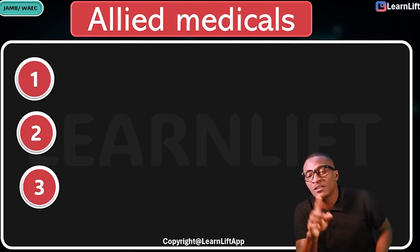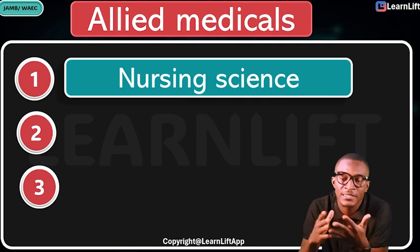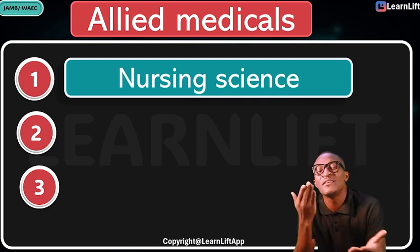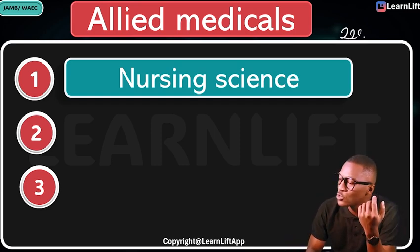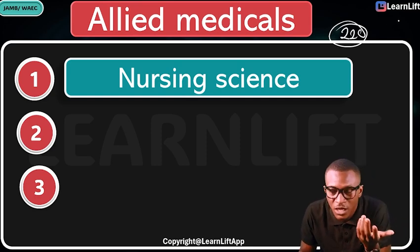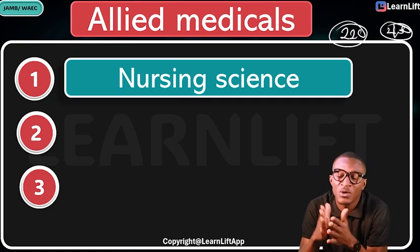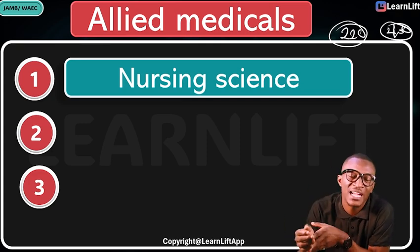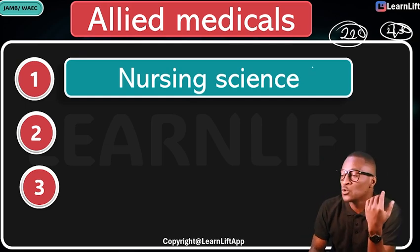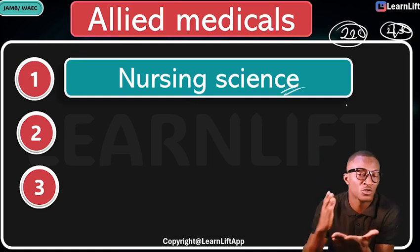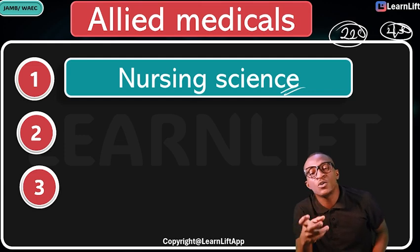Now let's talk about the allied medicals. The chief of all of them is Nursing Science. Every female science student wants to study Nursing Science, so it is very, very competitive. The quota does not exceed 200 to 250, and you're going to see four thousand to five thousand students applying for Nursing Science. That's why in most schools, Nursing Science has the same high cut-off marks as Medicine. If you're going to practice outside the country, Nursing Science is very good because they need more nurses and caregivers.